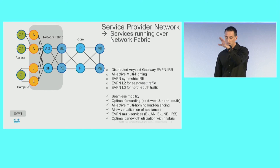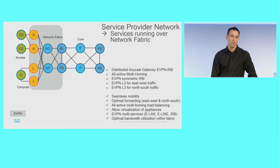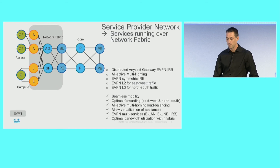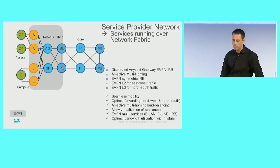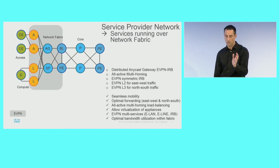By doing those things, you get all the advantages we took from the data center: seamless mobility, optimal forwarding, all-active, and so on. Looking at the distributed IRB gateway, we can push the L3 VPN very, very close to the application. You can do seamless motion virtualization. You have all the multi-homing of EVPN — all-active, single-active, port-active — all those multi-homing features you can imagine.